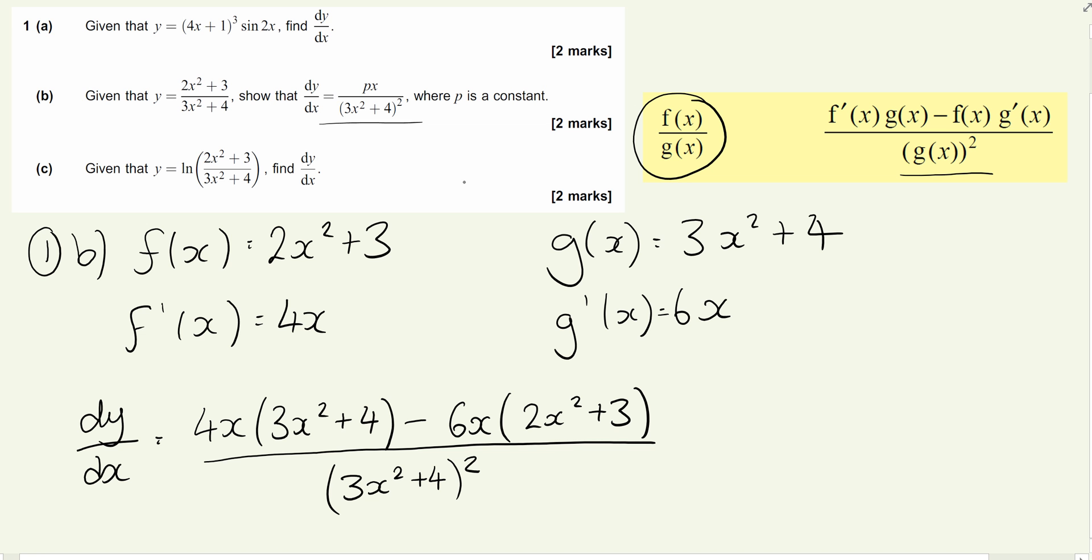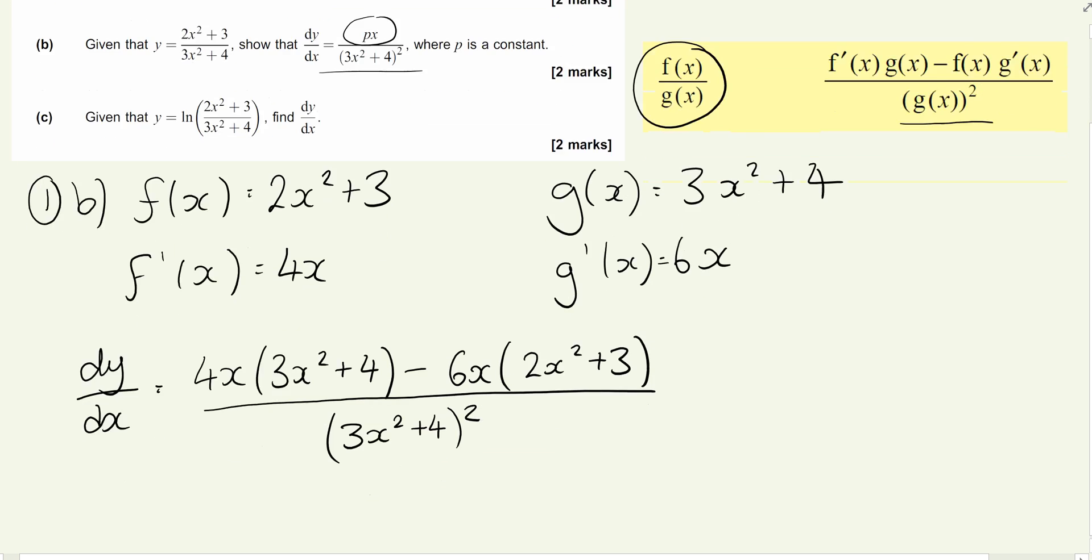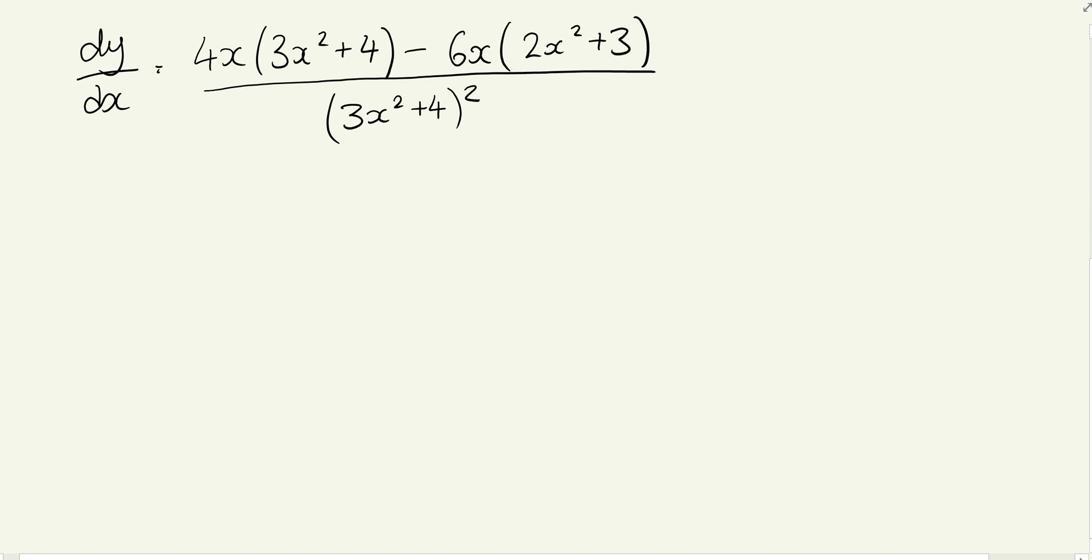Looking at what we're trying to find, we're trying to show that the numerator can be written as p(x), some constant times x, and the denominator we've got right. What we need to do is use our algebra skills to get this as a single term in x. Expanding each bracket, we get 12x³ + 16x - 12x³ - 18x. Be careful, you're multiplying by -6x for both those terms.